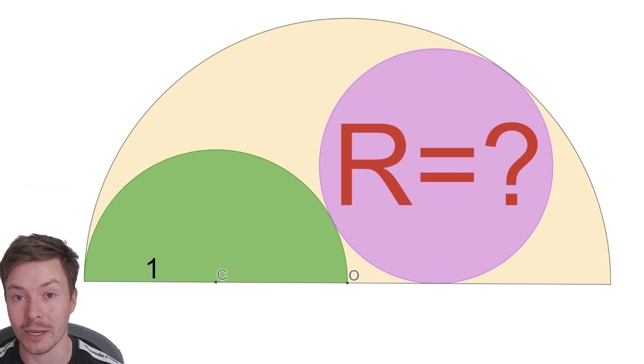The radius of the green semicircle is 1, which means therefore that the radius of the yellow semicircle must be 2.